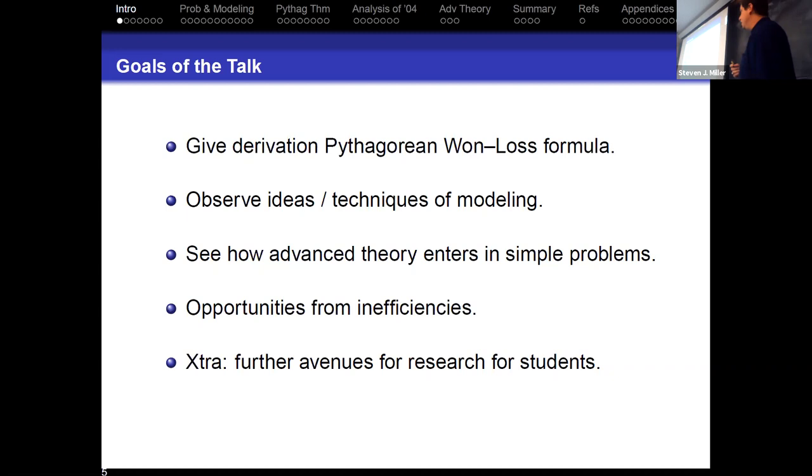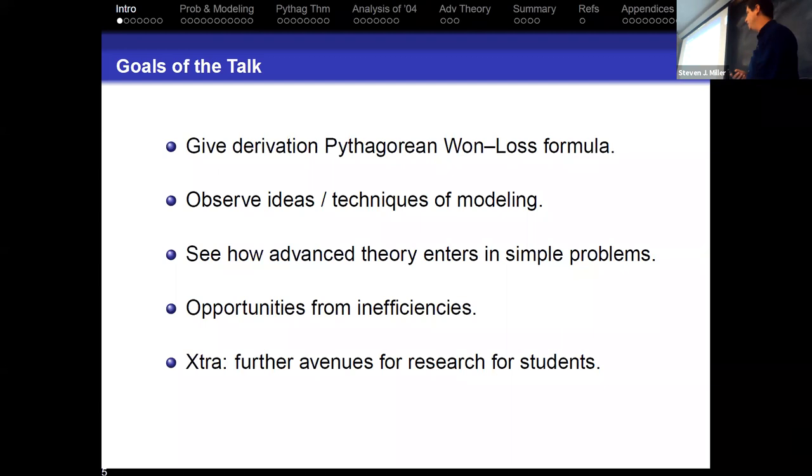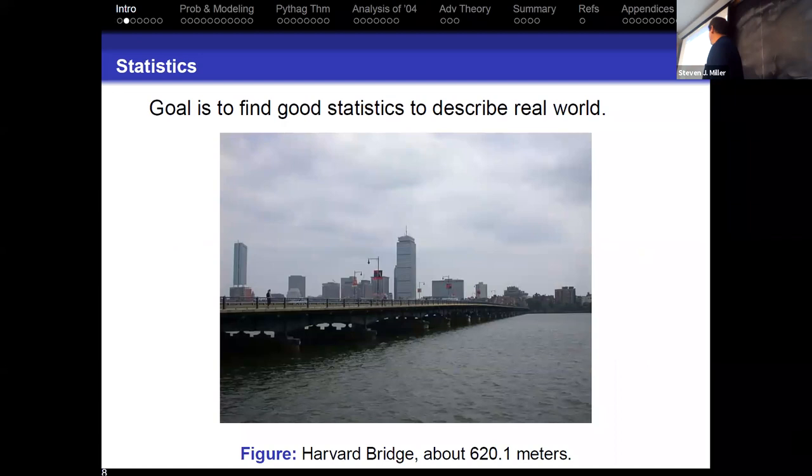There are also a lot of opportunities from inefficiencies. If you've ever read the book Moneyball or other books like that, I'm actually debating changing and pulling some topics from the course and moving some of that stuff from other books by Michael Lewis into this course to just have some good problems to think about. And then the last is if you are interested in research, I actually do work with some students on campus on applying sabermetrics either to lawsuits or to just fun projects. So the goal is to find a good statistic to describe the real world. Anybody know what bridge this is? Yes, this is not a hard question. Okay, so this is the Harvard bridge.